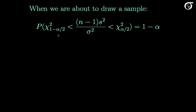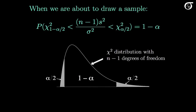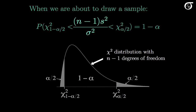We get these values — chi-square sub 1-alpha over 2, and chi-square sub alpha over 2 — from the chi-square distribution with n-1 degrees of freedom. I've drawn in a chi-square distribution here. The mean, variance, and shape of the chi-square distribution depend on the degrees of freedom. Chi-square sub alpha over 2 is the chi-square value that has an area to the right of alpha over 2, and chi-square sub 1-alpha over 2 is the chi-square value that has an area to the right of 1-alpha over 2, and therefore an area to the left of alpha over 2. The probability that this middle quantity takes on a value between those two chi-square values is 1-alpha.